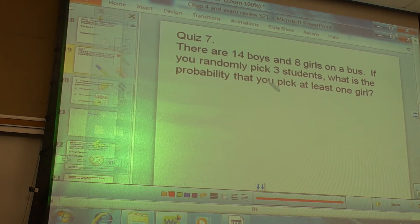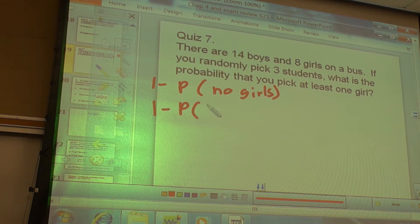So, what's the probability that you pick at least one girl? Well, I need to find the probability that I pick... No girls. Yep. No girls. Everybody on board with that? So, I need to find the probability that the first one... So, one minus probability of no girls is... That means boy, and boy, and boy. Everybody okay with that part? Yeah?